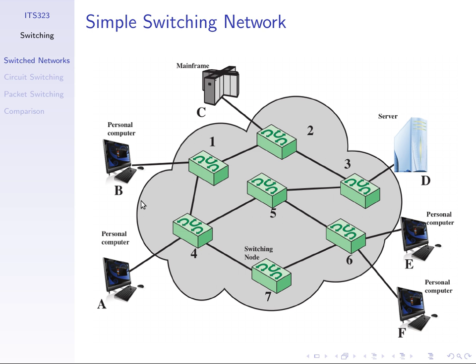The switching nodes' role is to forward the data, to forward the information of the end user devices between, say, A and D. This diagram shows links between stations and switching nodes — like A to switching node 4 — and links between switching nodes, such that all stations have links to at least one switching node. Via multiple links we can send data, say from A to B, via the path: switching node 4, switching node 1, which then sends it to B.